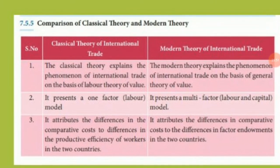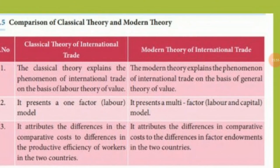Difference between classical and modern international trade theory: first, classical theory explains based on labor theory of value, while modern theory explains based on a general theory of value. Second, classical theory is mainly a single-factor (labor) model, while modern theory is multi-factor — both labor and capital. Third, classical theory attributes difference in comparative cost to difference in productive efficiency of workers, while modern theory attributes it to difference in factor endowment between countries.